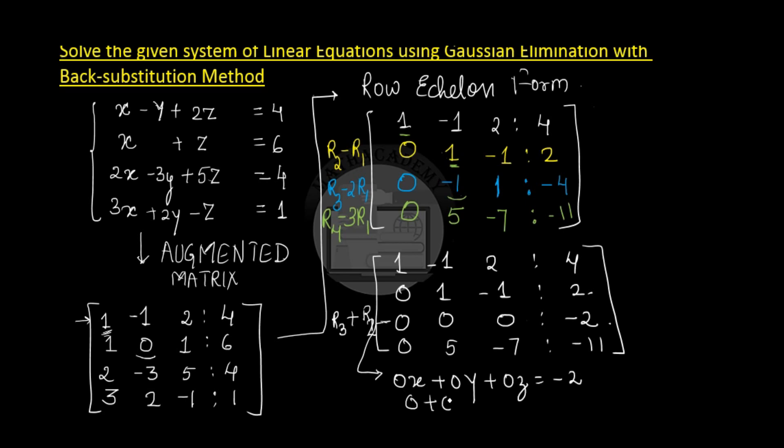0 multiplied by any number is 0, so I will have 0 plus 0 plus 0, which is again 0. And 0 can never be equal to minus 2. Am I right?